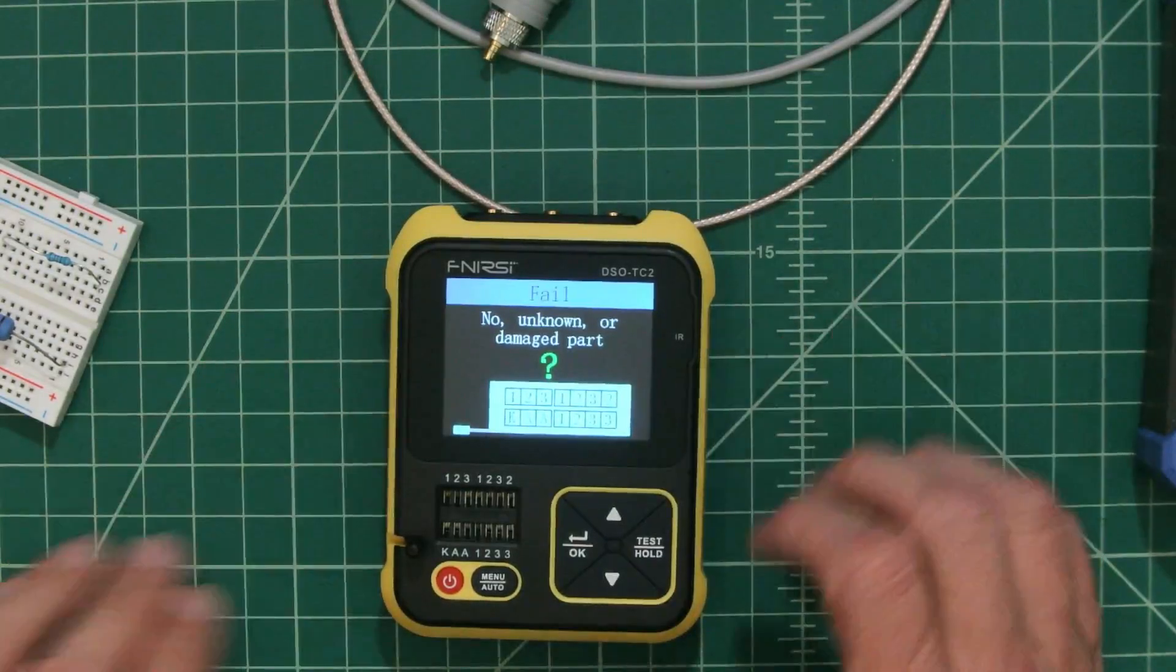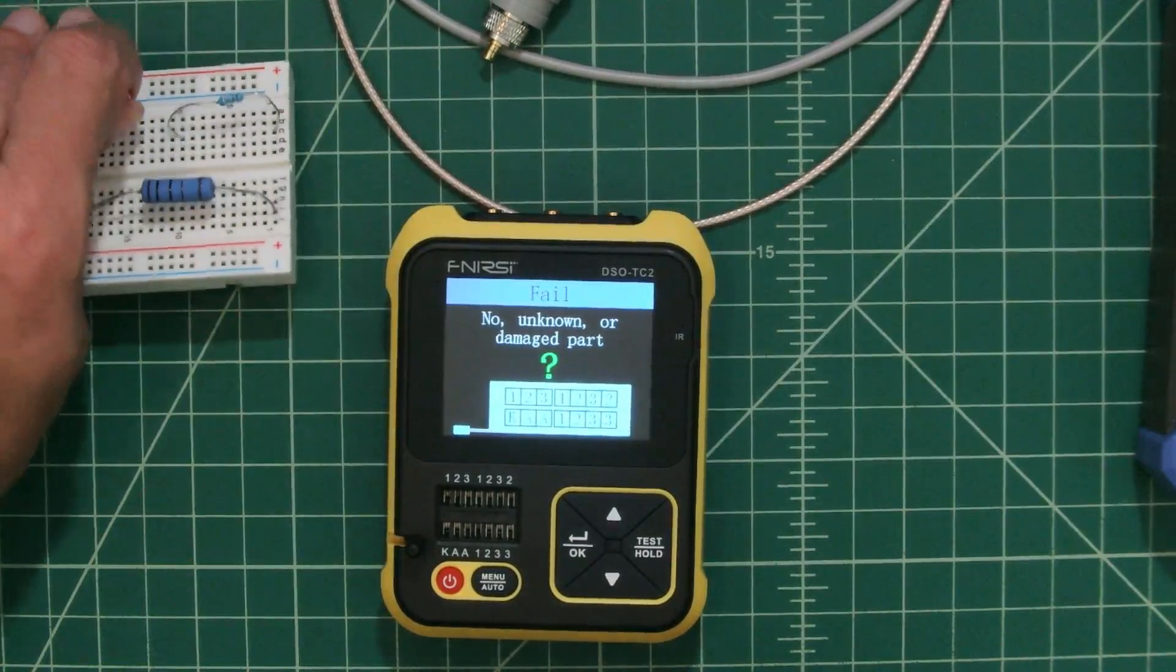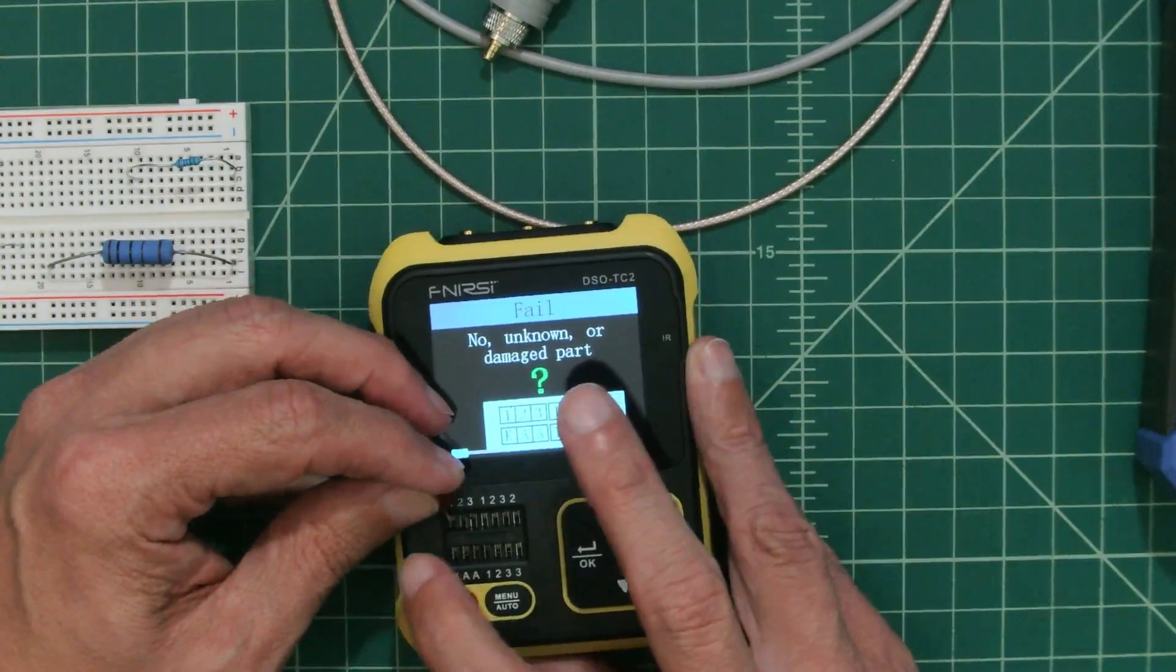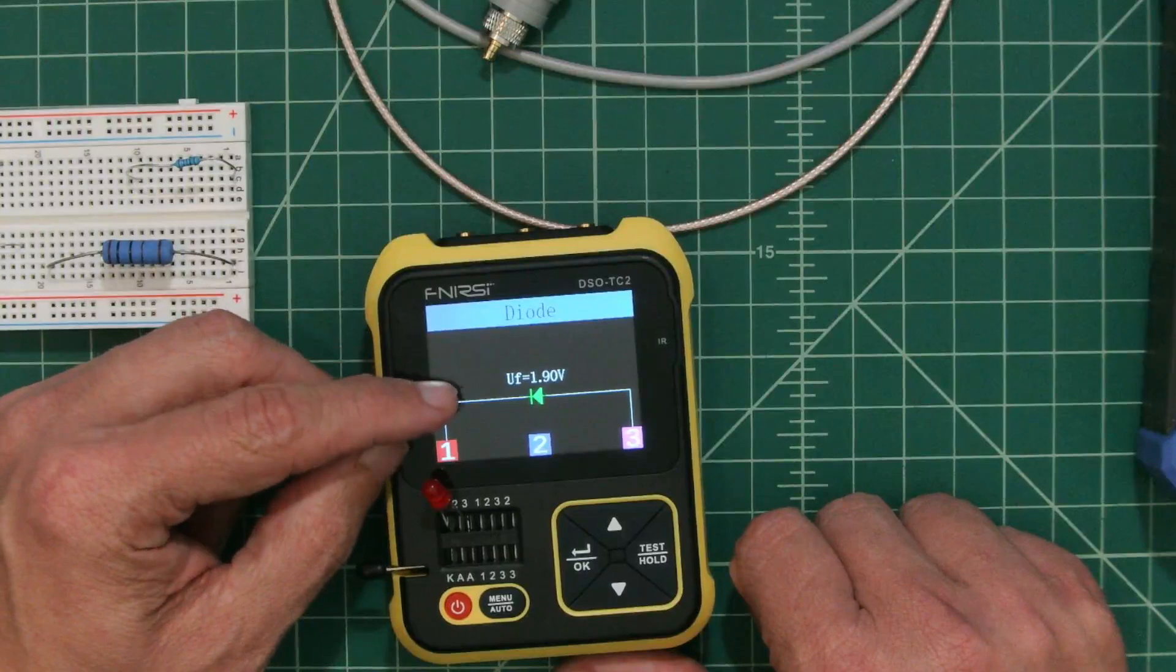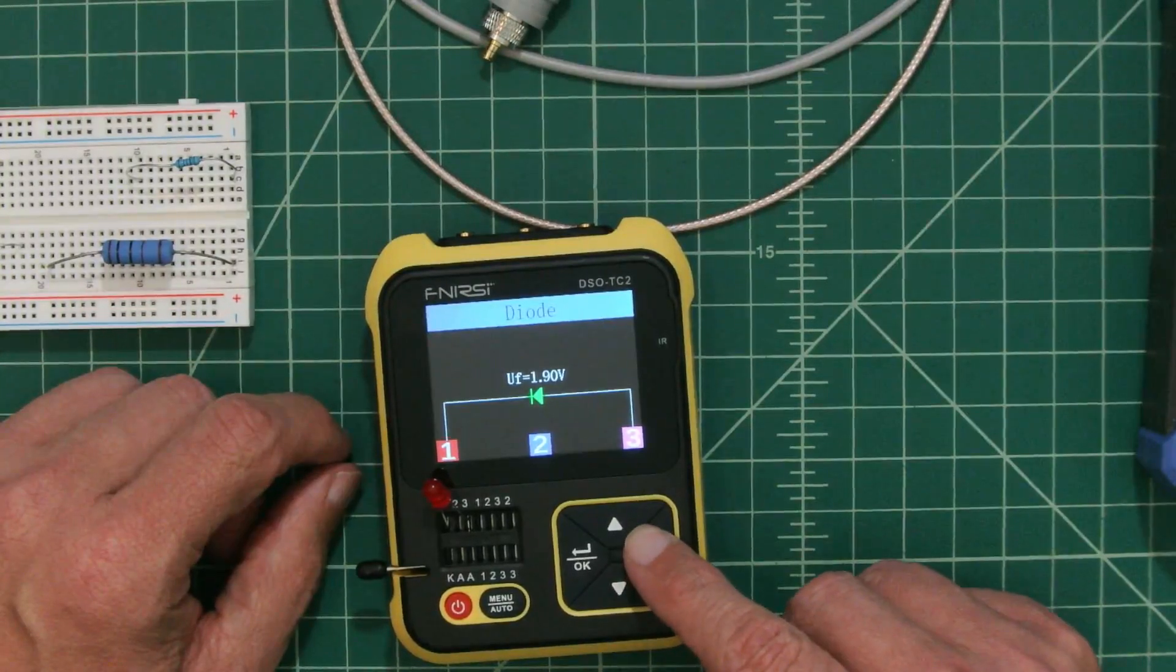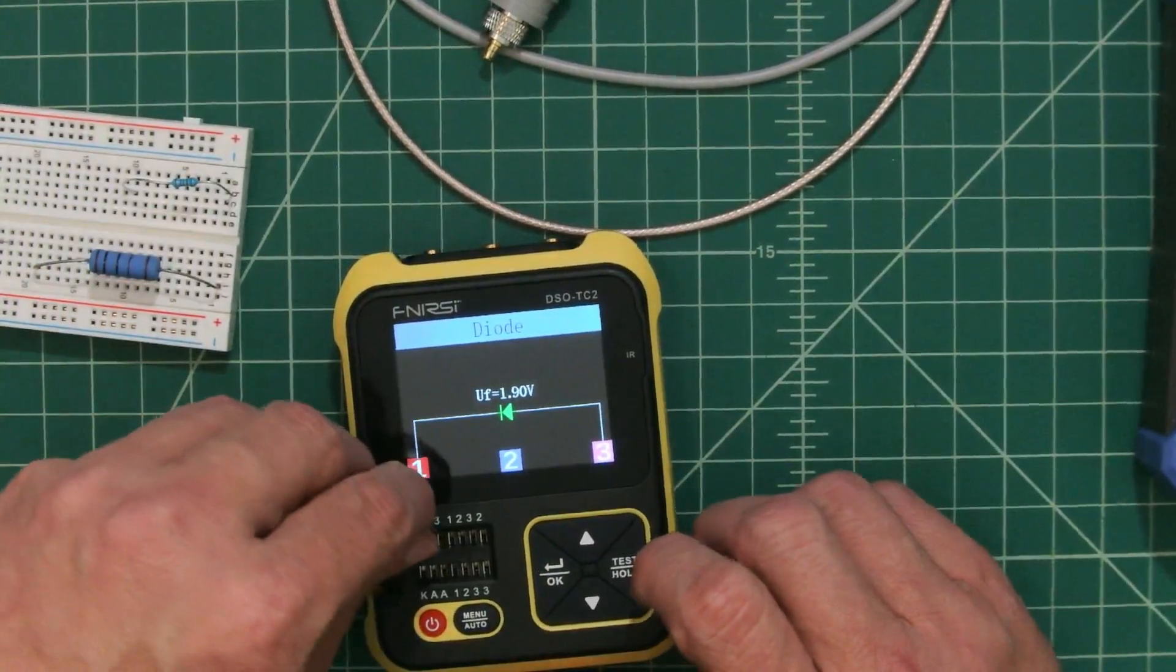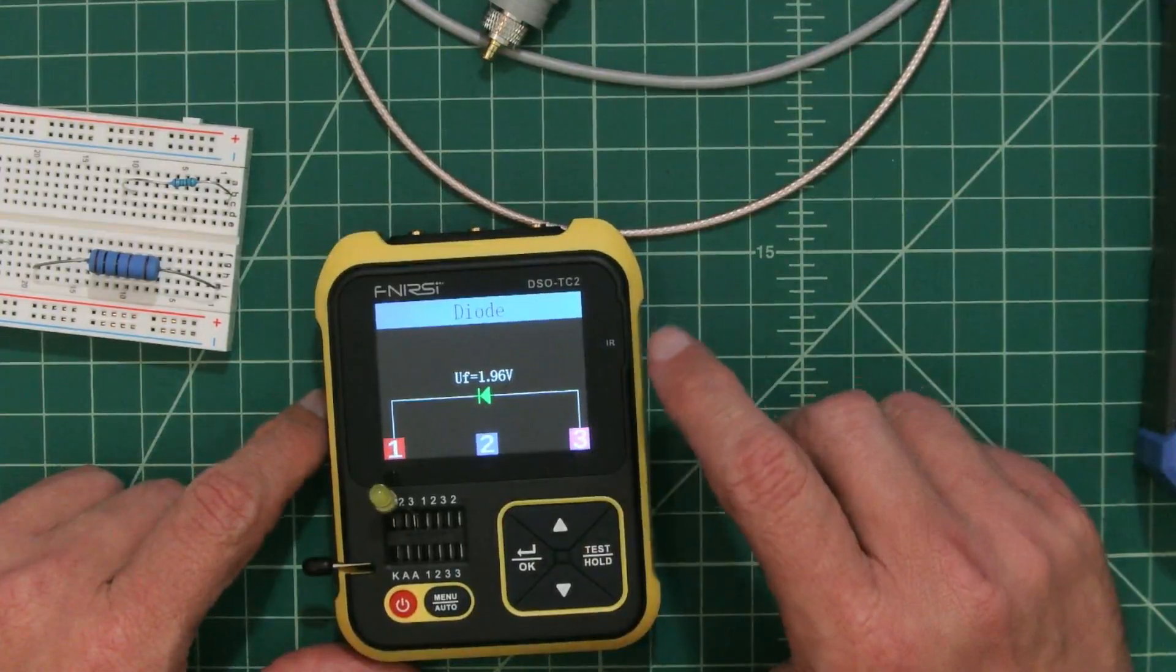We are in the testing configuration here, and I'm not sure what you can and can't test. Let's start with an LED that we have here. I'm just going to jam it in at positions one and three, lock that, and I think I just hit this button to test. It's telling me that my forward voltage is 1.9 volts, and it is a diode connected to one and three. That was pretty cool. You can see when it is testing the diode lights up. Let's take that one out and see if we can do a yellow one. You can see 1.96 volts forward voltage. That's pretty cool.